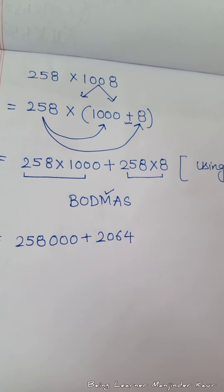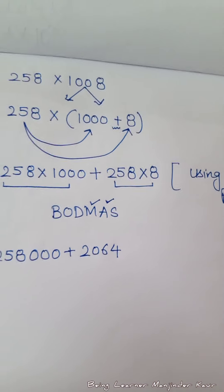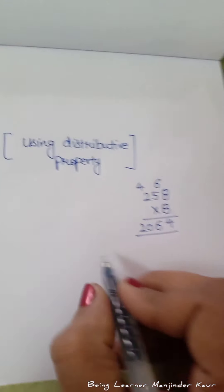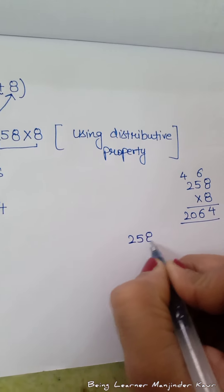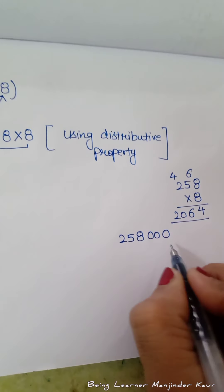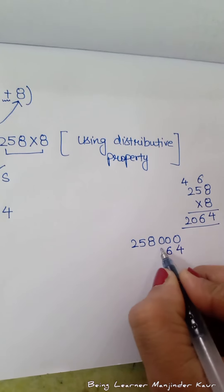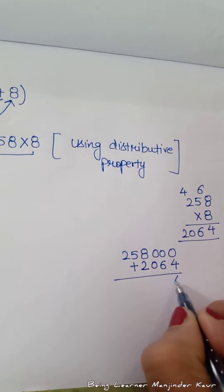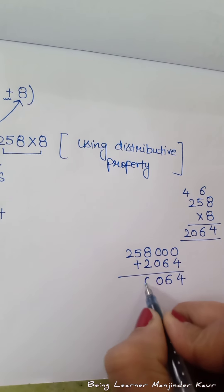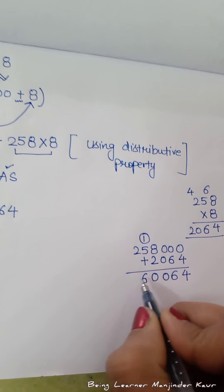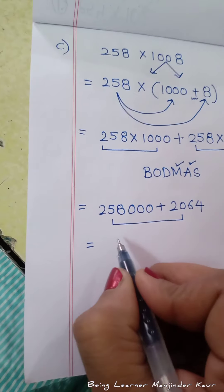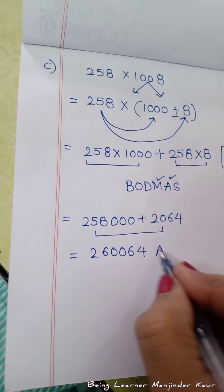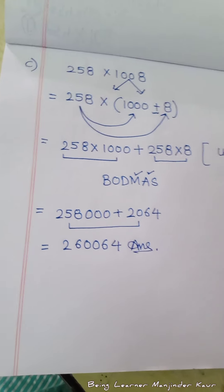Multiplication के दोनों steps हो गए। उसके बाद क्या करना है? Addition — yes, there is a sign of addition। Side पर addition कर लेते हैं: 258000 plus 2064। यहाँ पर 4, यहाँ पर 6, 0, 8 plus 2 = 10 — 1 carry चला जाएगा। 6, 2 — so our answer is 2, 6, 0, 0, 6, 4 — यानी 260064 is the answer।